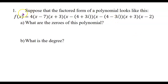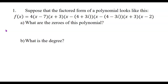Suppose that the factored form of a polynomial looks like what you see on your screen, or what you're looking at if you have a copy of the notes for this section. What are the zeros of this polynomial? This is where you would pause if you want a second to think about it.